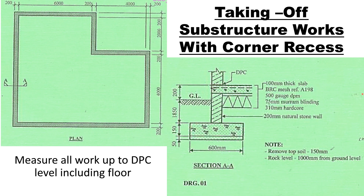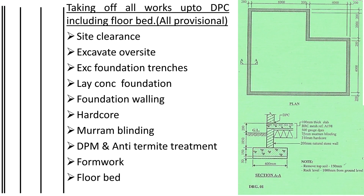Let's get started. When taking off, there is a procedure you follow. First, we do site clearance, then we excavate the oversite. The oversite is the topsoil — whenever you clear the site there is vegetation held in place by the topsoil. Topsoil is the soil that supports growth, and it's not good for construction, so we always excavate it. In your notes you are told the topsoil depth, typically 150 millimeters, so you excavate that 150 millimeters.